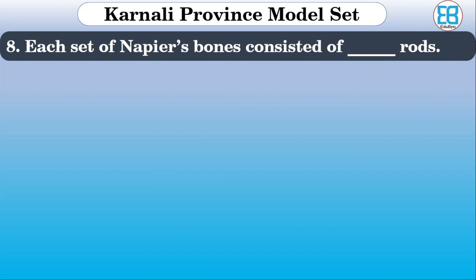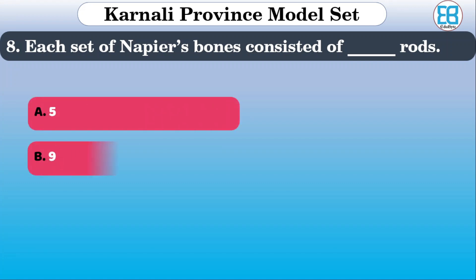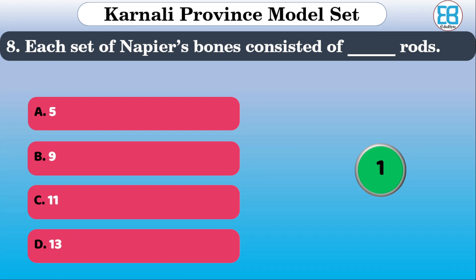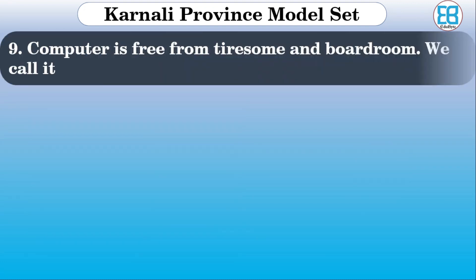The next question involves a set or sequence. The options given are 5, 9, 11, 13. The correct option is 3 and 11.